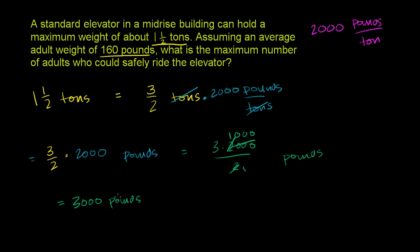So we've figured out the maximum capacity of the elevator. It can hold 1 and a half tons, which is the same thing as 3,000 pounds. Now we need to figure out how many average adults of 160 pounds equals 3,000 pounds. We can divide by 160.